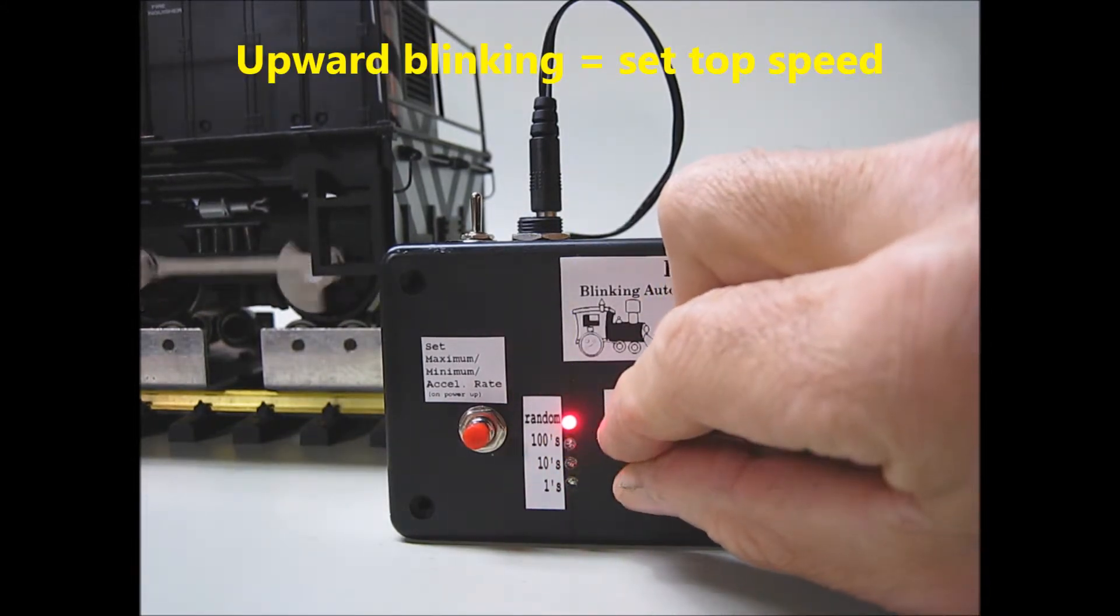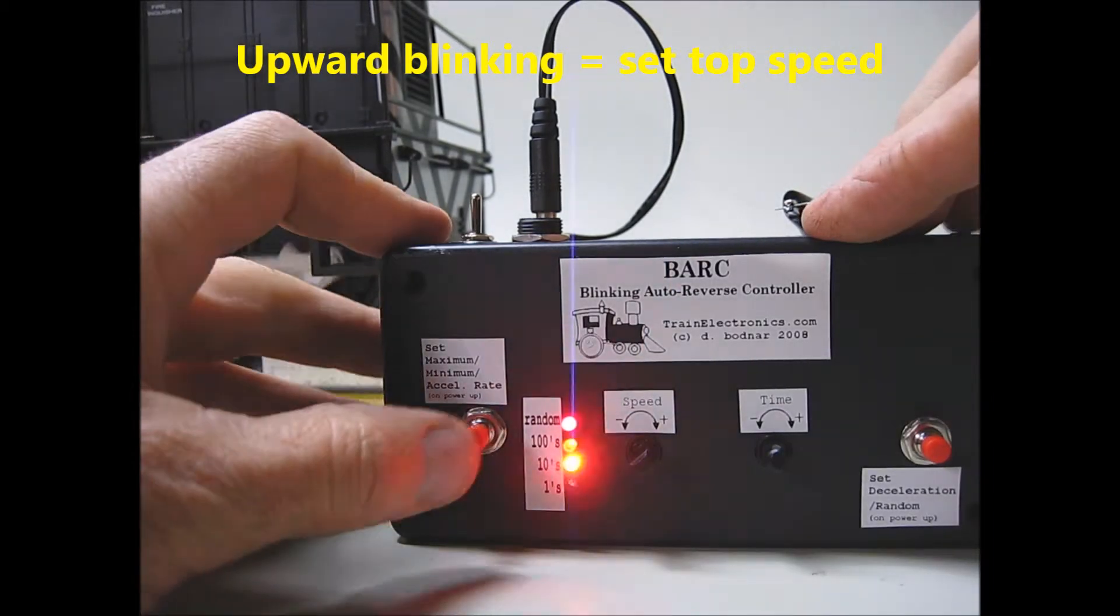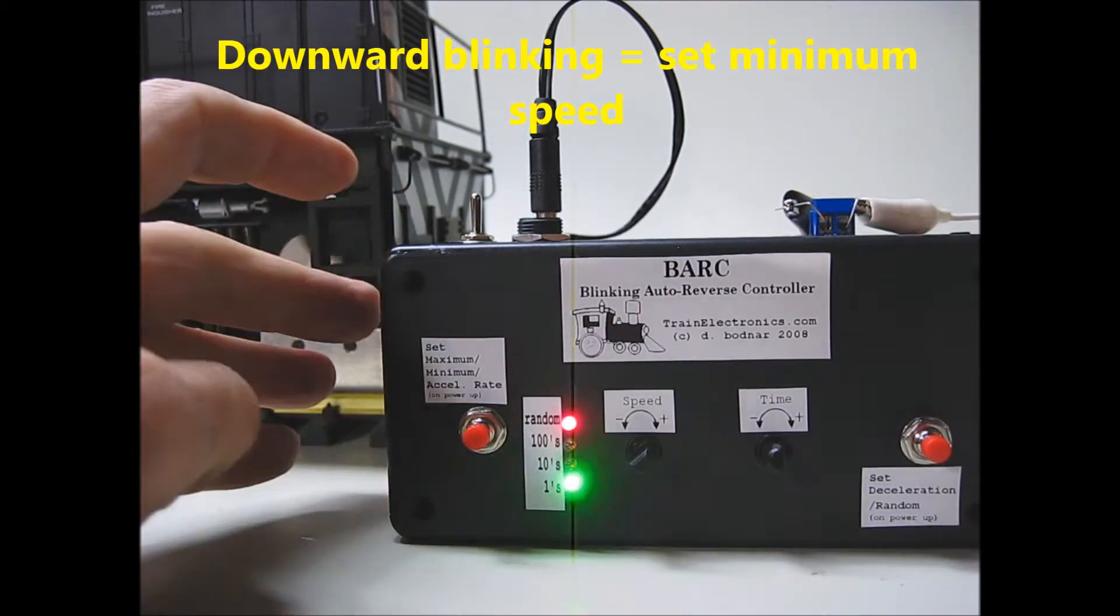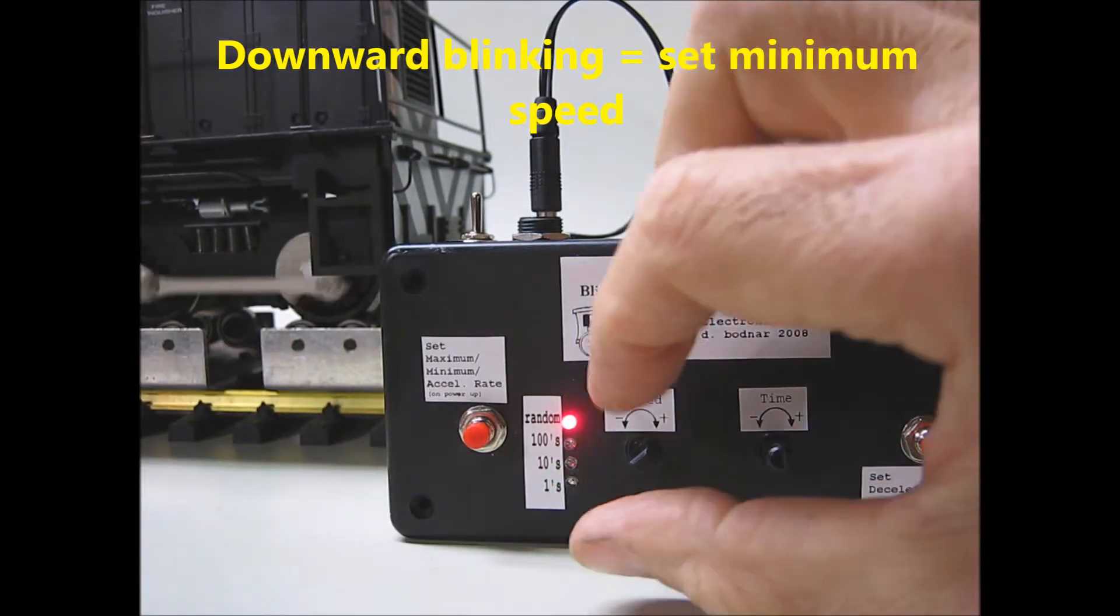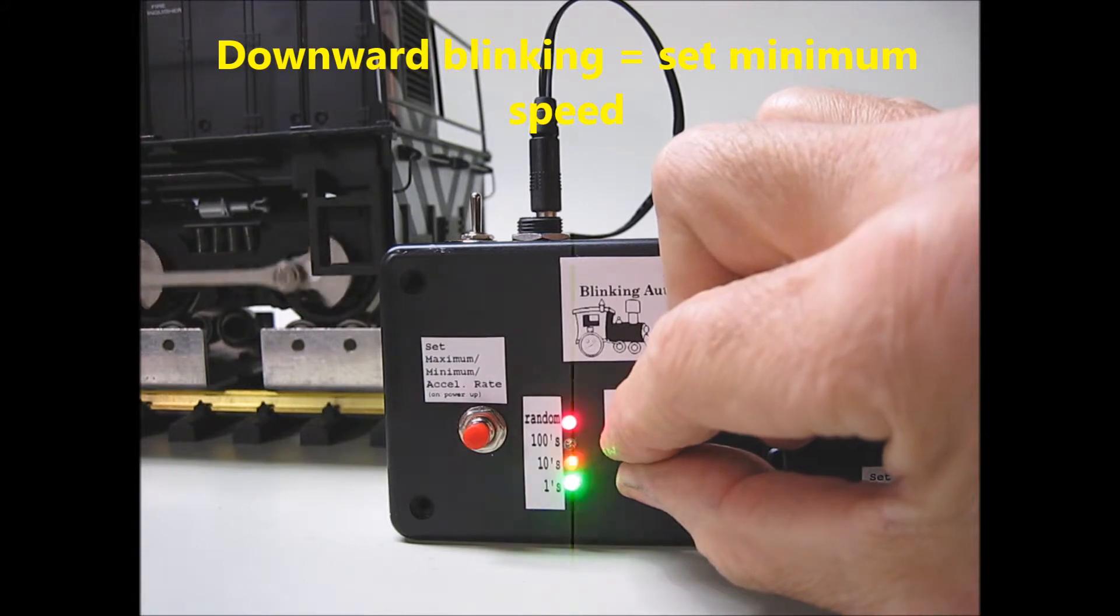I'm going to turn it up to full speed. Then I'll press the button again. This time the lights blink in a downward direction. I'll take it down to almost a complete stop. There we go, nice and slow. Press the button again.